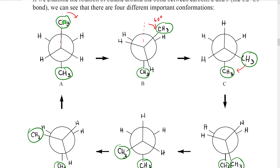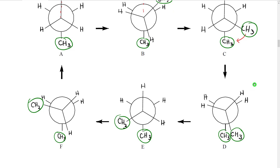Starting our rotation, we have one conformation where the methyl groups are 180 degrees apart. We then rotate and get an eclipsed conformation where the front methyl group is eclipsing a hydrogen, the back methyl group is eclipsing a hydrogen, and the two remaining hydrogens are eclipsing each other. Continuing to rotate, we get a staggered conformation where the methyl groups are only 60 degrees apart.